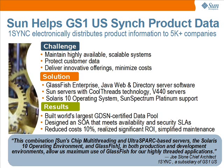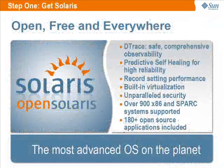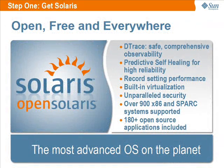Let's talk about how you can build an app server with enterprise features at open-source pricing. We start with the free-to-deploy open-source Solaris 10 operating system, which has been optimized for highly-threaded applications like Glassfish while delivering robust performance and availability features critical in your web infrastructure. From fault management architecture, DTrace, ZFS, and free virtualization capabilities, Solaris is the most advanced operating system on the planet.